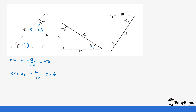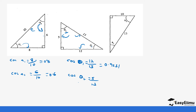Looking at another angle, the cosine is going to be the adjacent which is 12 over the hypotenuse which is 13, which gives us 0.9231. For the other angle, the cosine gives us the adjacent which is 5 over the hypotenuse which is 13, so 5 divided by 13 gives us 0.3846.